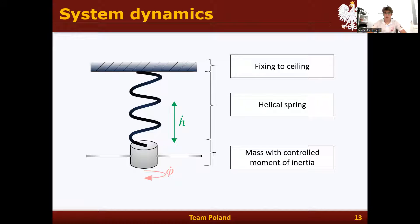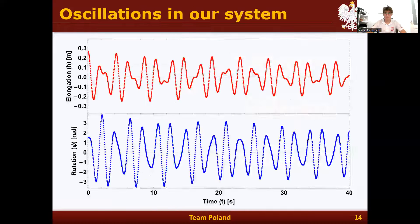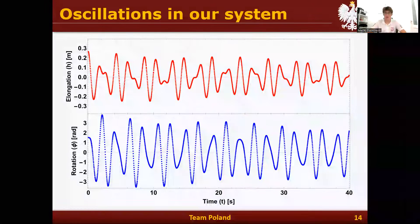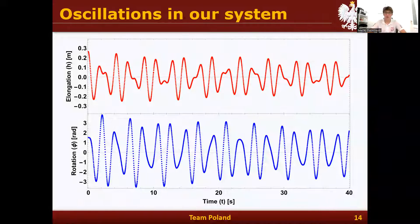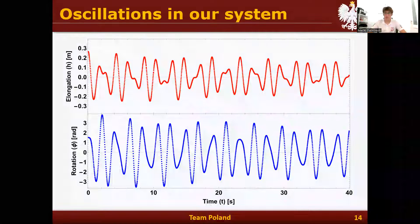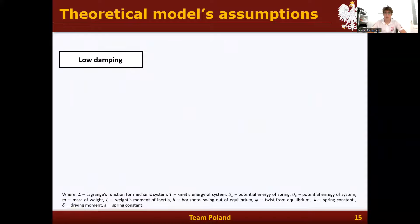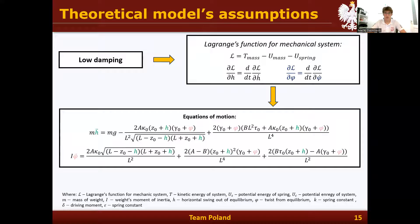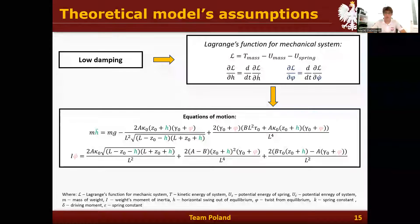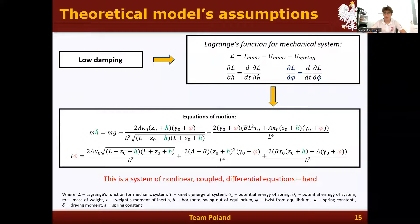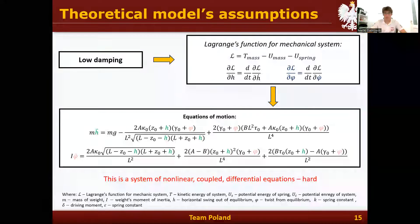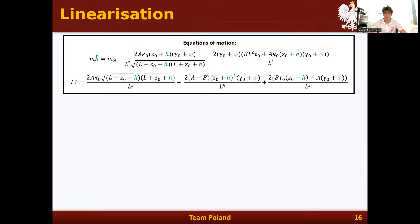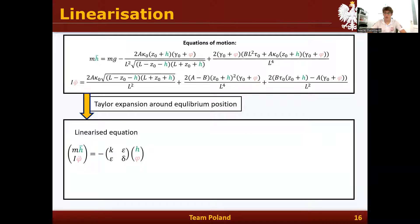After examining the helical spring, we can now move to system dynamics. The first thing we did was recording oscillations of the Wilberforce pendulum in both coordinates. On this 40-second-long sample, you can see that the amplitude of oscillations didn't decay much in time, so the damping in our system is low. Thanks to that, we can use the Lagrange function — the difference between kinetic and potential energy — to get the equations of motion. These equations of motion are nonlinear coupled differential equations. To solve them analytically, we have to simplify them by linearization using Taylor expansion around the equilibrium position.